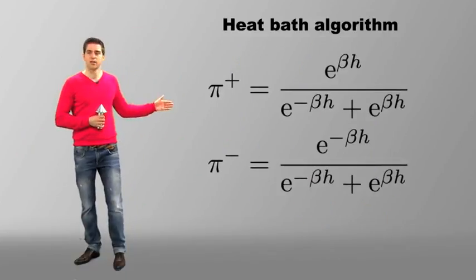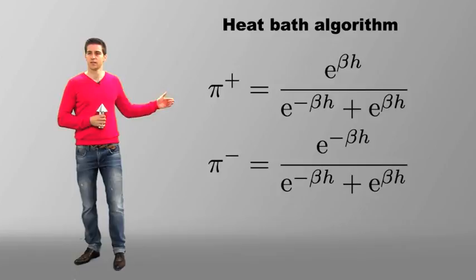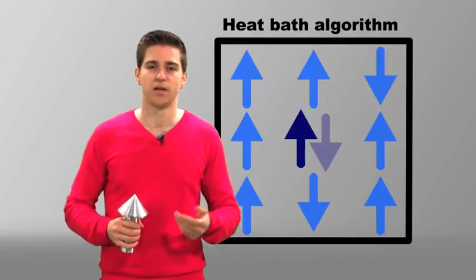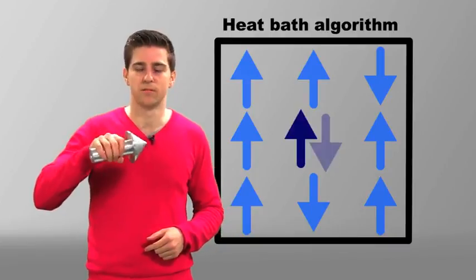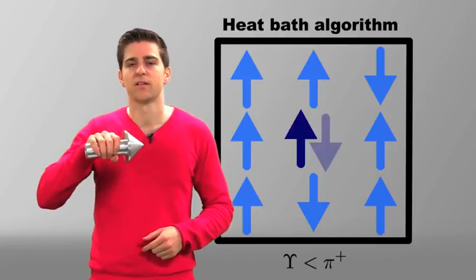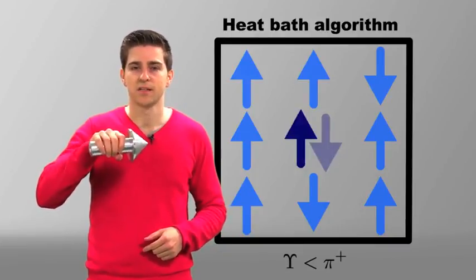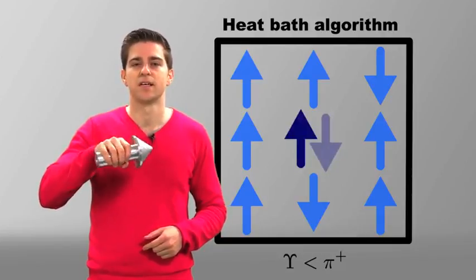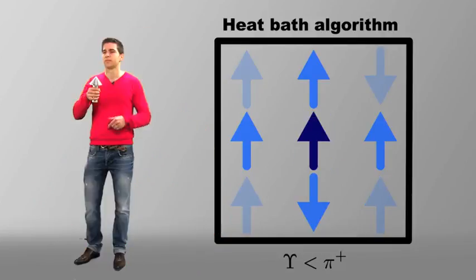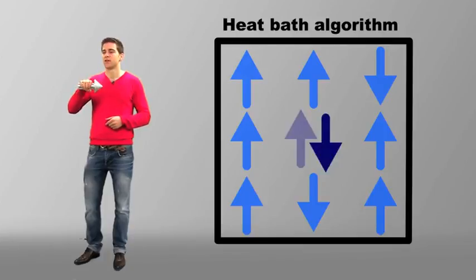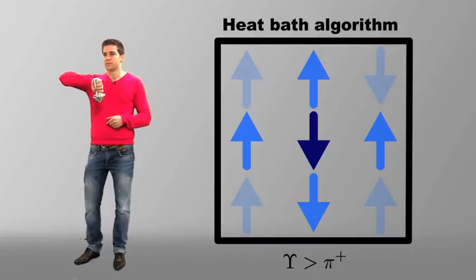This leads to the normalized probabilities pi plus and pi minus. So if a random number y between 0 and 1 is smaller than the probability pi plus, we return the spin in the state plus 1. If, on the other hand, the number y is larger than pi plus, we return the spin in the state minus 1.